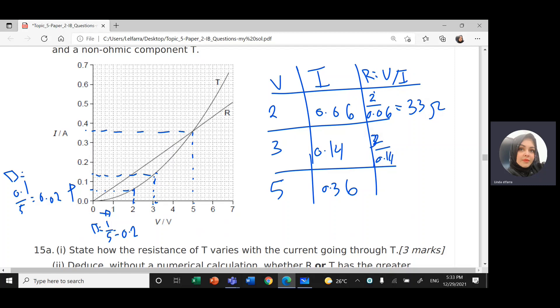2 divided by 0.14, 3 divided by 0.14, 14 Ohm. 5 divided by 0.36, 13.8 Ohm. So as I increase the voltage, what will happen to the resistance? The resistance decreases.